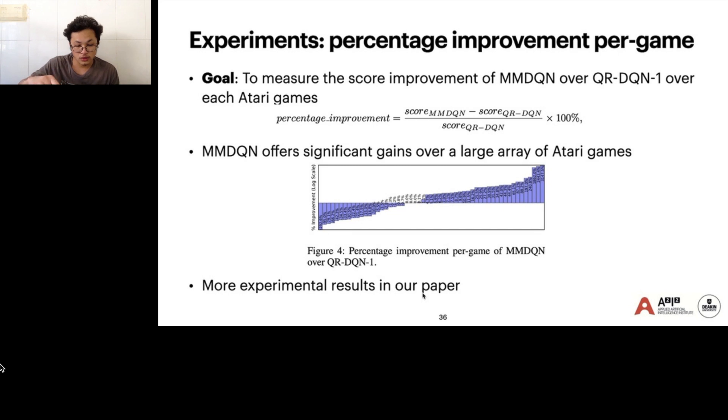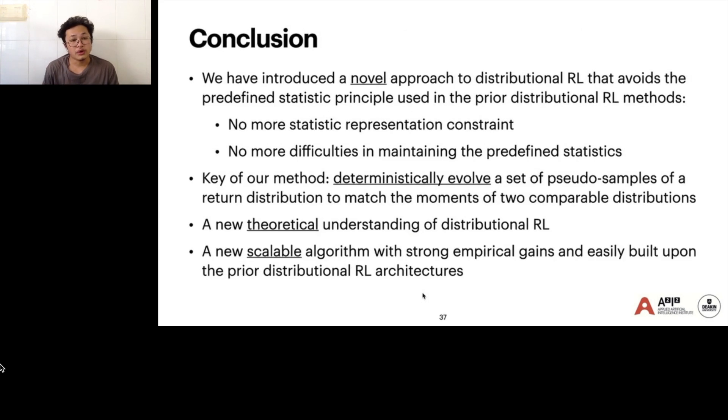For more experimental results, take a look at our paper. In conclusion, we have introduced a novel approach to distributional RL that can avoid the predefined statistics principle. The key of our method is to evolve a set of pseudo-samples of a return distribution to match the moments of the distributional Bellman target. We provided a new scalable algorithm with strong empirical gains.